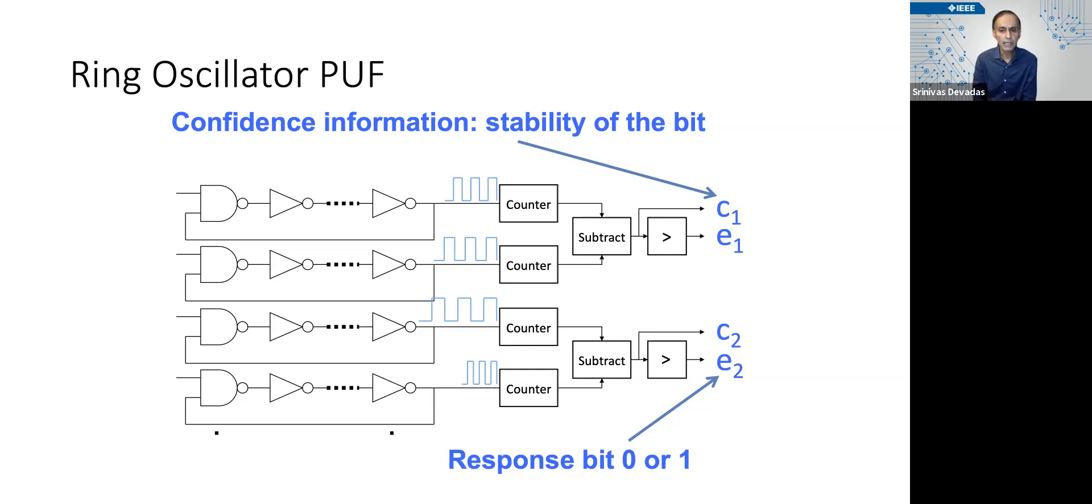And the idea is that if you have two ring oscillators that are very far apart in frequency, the difference in the counter values is going to be large and it's very unlikely that even with dramatic environmental variation that a ring oscillator that's running at one gigahertz is going to get faster than a ring oscillator that was running at two gigahertz at a particular temperature.